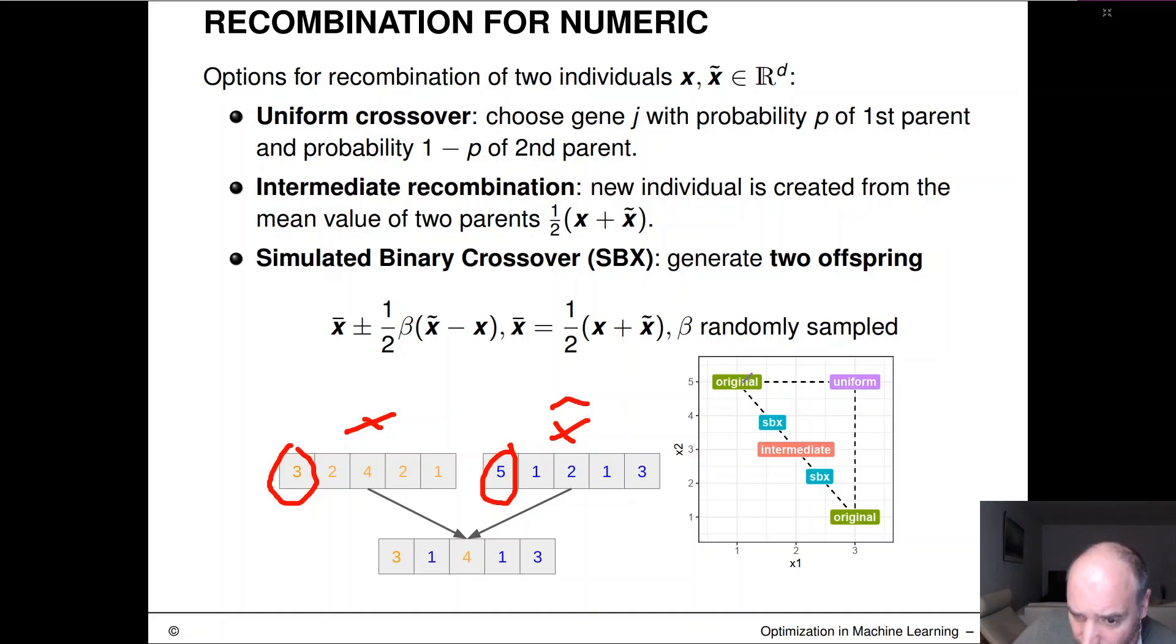So if you think about these two guys living in the 2D space, then here you maybe have x and here you have x tilde, and then intermediate recombination would be here. We can also nicely in this 2D visualization now think about what would happen with uniform crossover. So uniform crossover would for example be here if you would have selected one component from the left parent and one from the right.